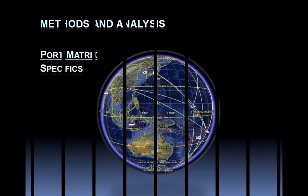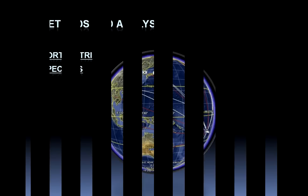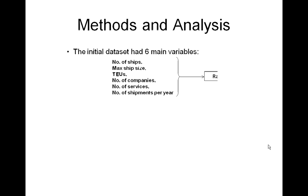In referring to the methods and analysis, the initial data set had six main variables: number of ships, the maximum size of the container ship, and TEUs, which refers to 20-foot equivalent units.